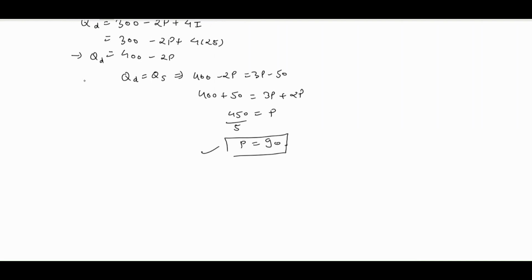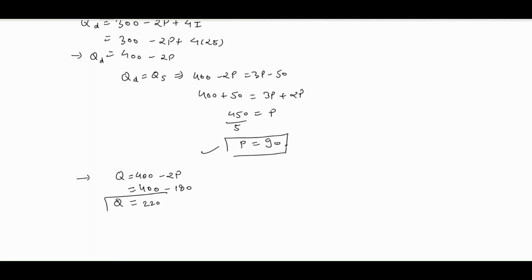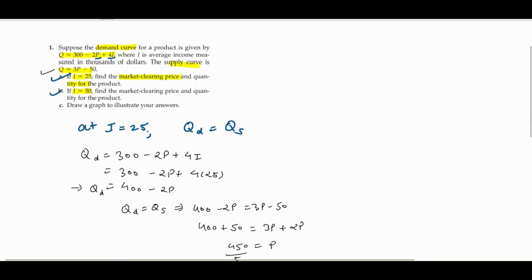To find the market clearing quantity, substitute p equals 90 into the demand function. Q equals 400 minus 2 times 90, which is 400 minus 180, giving Q equals 220. So the market clearing quantity for part a is 220.